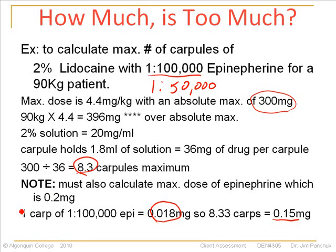The other thing to be aware of is the amount of time the anesthetic is administered over. It's a totally different story if I administer 8.3 carpules over an 8-hour long appointment versus giving 8.3 carpules right in a row at the beginning of an appointment. So the maximum amount you can give a client depends on the drug qualities and quantities, and also on the amount of time that the anesthetic is administered over.